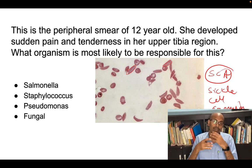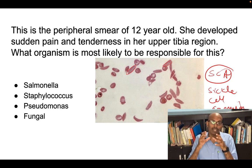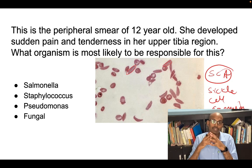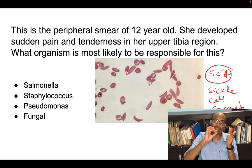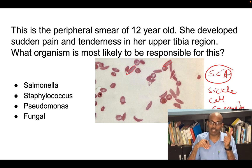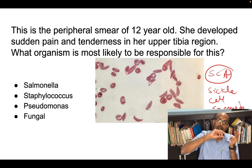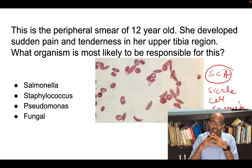Osteomyelitis occurs in children very commonly around the knee region, and around the knee the most common location is the upper tibial metaphyseal region. There are two or three reasons why osteomyelitis occurs here: first, blood vessels make a loop formation, making blood more sluggish; second, oxygen tension is decreased, allowing bacterial seeding; and third, phagocytic activity is reduced in this metaphyseal region.